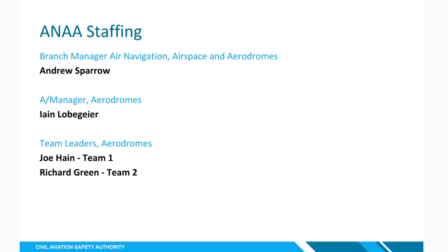On air navigation, airspace and aerodrome staffing: we have Andrew Sparrow as branch manager for ANAA, Ian Lovengeiger as Acting Manager of Aerodromes, and two team leaders — Joel Haynes for Team 1 and Richard Green for Team 2. The two teams have different areas of responsibility. Team 1 covers the southern region — Victoria and Tasmania — and the western region — South Australia and Western Australia. Team 2 looks after the Sydney region, most of New South Wales, the eastern region covering southeast Queensland, and the northern region covering northern Queensland and the Northern Territory.